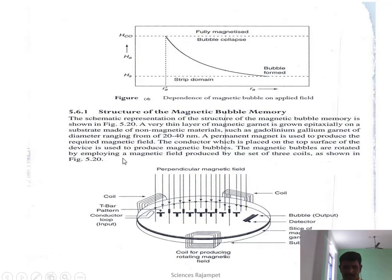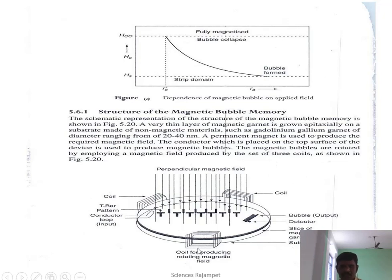The magnetic bubbles are rotated by employing the magnetic field produced by a set of three coils as shown in the figure. The non-magnetic material forms the frame, on which the magnetic strips are mounted epitaxially. By using garnet or gadolinium, the magnetic field is applied on the magnetic strips perpendicularly, and all the magnetic strips are converted into small bubbles. This is the structure of the magnetic bubble memory.